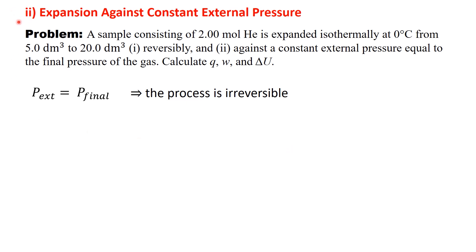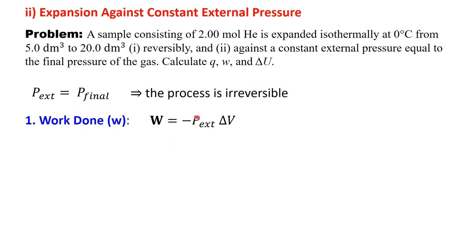Now let's move on to part 2. The gas expands against a constant external pressure equal to its final pressure. Since the external pressure remains constant during the expansion, the process is irreversible. For irreversible expansion, work equals negative P_ext times ΔV, where P_ext is the constant external pressure equal to the gas's final pressure, P final. So first, we need to find P final.